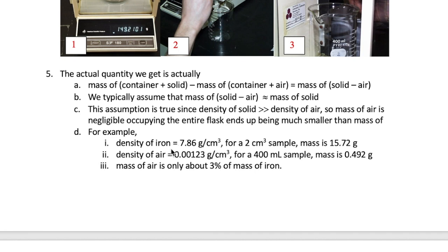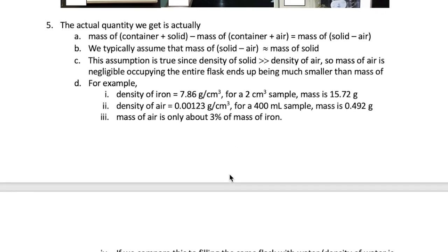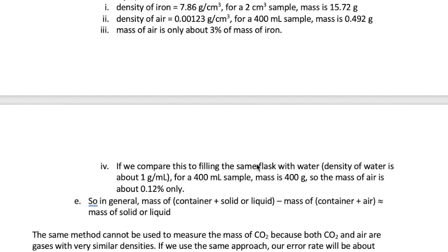So here's an example. If our solid is iron, its density is 7.86 grams per cubic centimeter. If we have a small sample of about 2 cubic centimeters, its mass will be 15.72 grams. In contrast, the density of air is 0.00123 grams per cubic centimeter. A beaker full of air at about 400 milliliters would only weigh about 0.492 grams. This means that the mass of air is only about 3% the mass of the iron sample. Now let's consider filling that same beaker up full of water, which has a density of about 1 gram per milliliter. For that same size beaker, we see that the mass of water is now 400 grams, which makes the mass of air about 0.1% of the mass of water. So in both cases, we see that the mass of air is small relative to the mass of either solid or liquid in the same container. This is the reason why we are able to disregard the mass of air in our calculation.